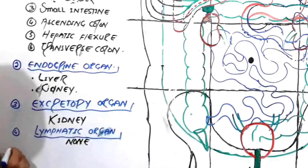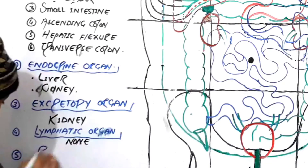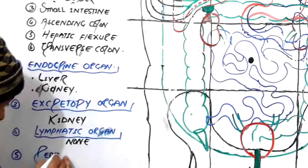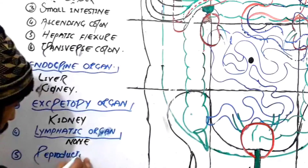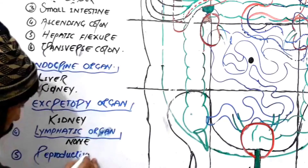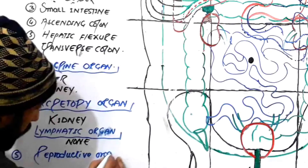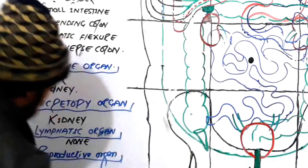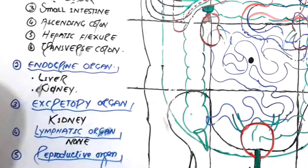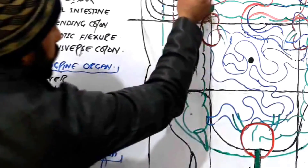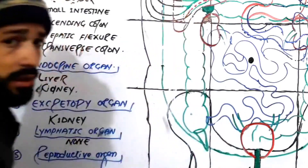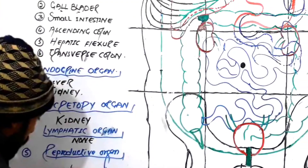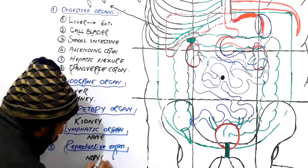What about reproductive organs? Are there any reproductive organs in the right hypochondric region? No — none of the reproductive organs are found in the right hypochondric region.